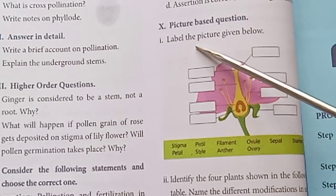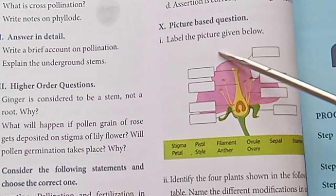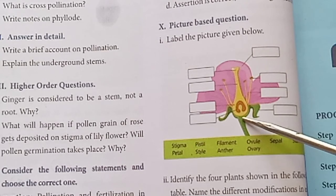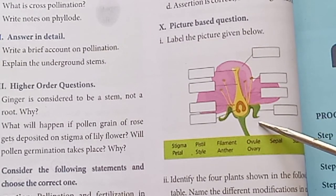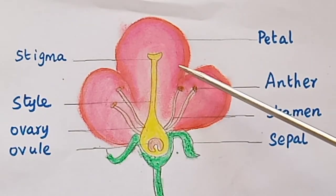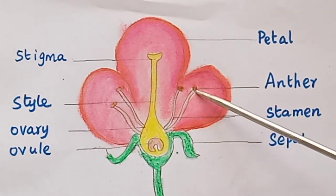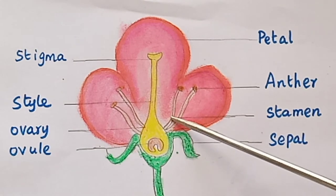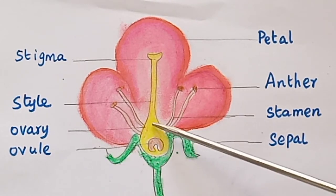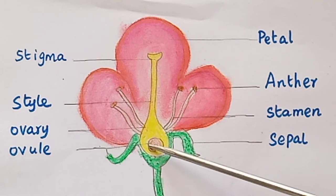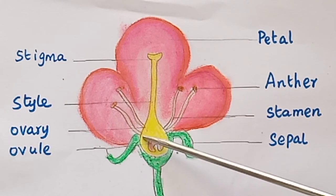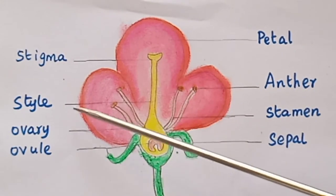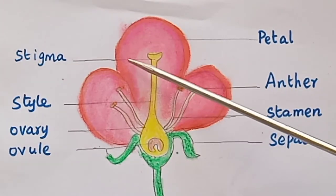Picture-based question: Label the picture given below. The anther is labeled at the top. Stamen is identified. The green portion is the sepal. The ovule and ovary (yellow portion) are labeled. The tube-like structure is the style, and the top part is the stigma.